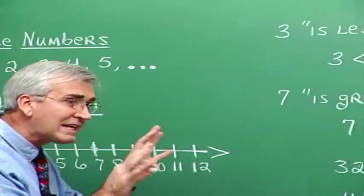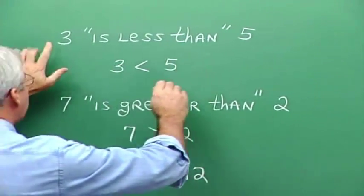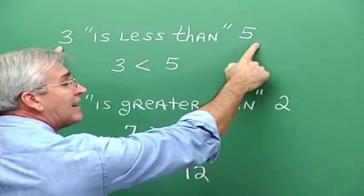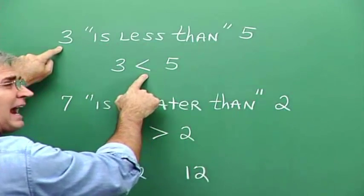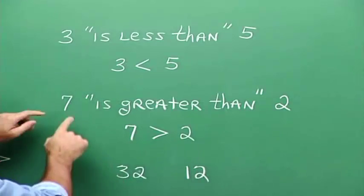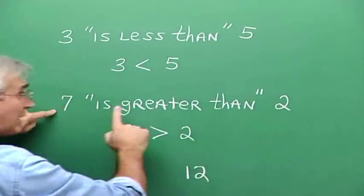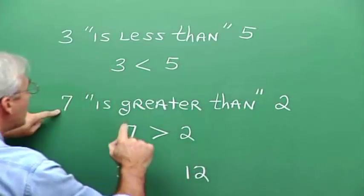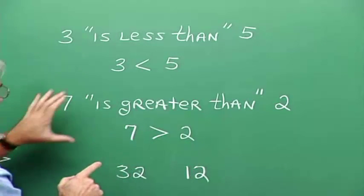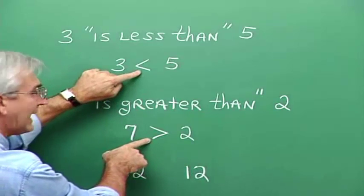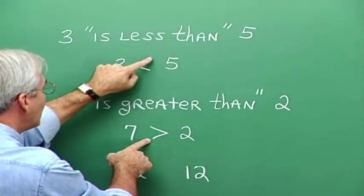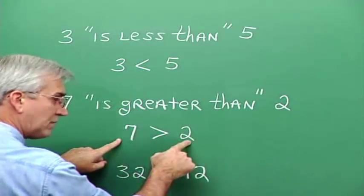Here's how we write the order relationship. We know that on the number line, three lies to the left of five. So we say that three is less than five. The notation for 'is less than' is this little arrowhead-looking symbol, and this is read 'three is less than five.' If we want to write that seven is greater than two — and we know that because seven lies to the right of two on the number line — we use this symbol: seven is greater than two. Notice that in both cases, the little arrowhead tends to point toward the smaller of the two numbers.